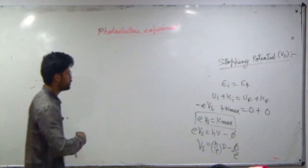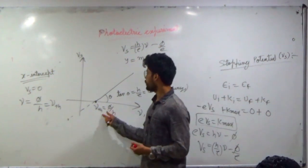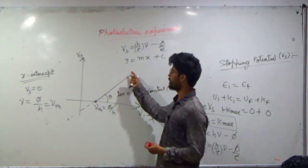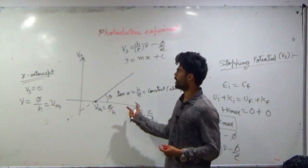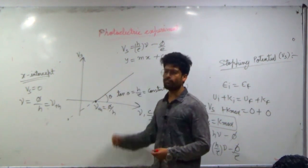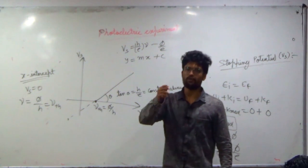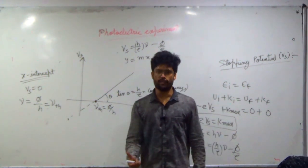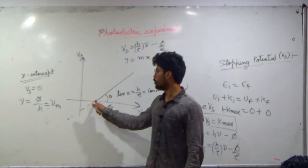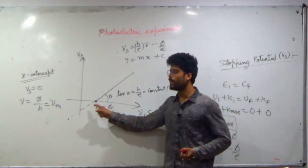Now let's make the graph of stopping potential versus frequency. The threshold frequency appears as the x-intercept, because at threshold frequency the kinetic energy is zero, so stopping potential is also zero — the electron is already stopped and needs no opposing potential. As frequency increases beyond threshold, stopping potential increases linearly.